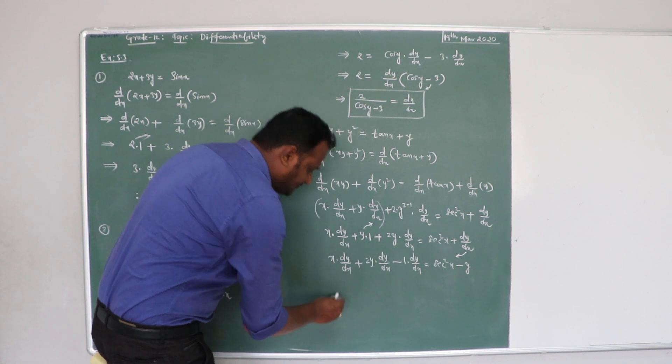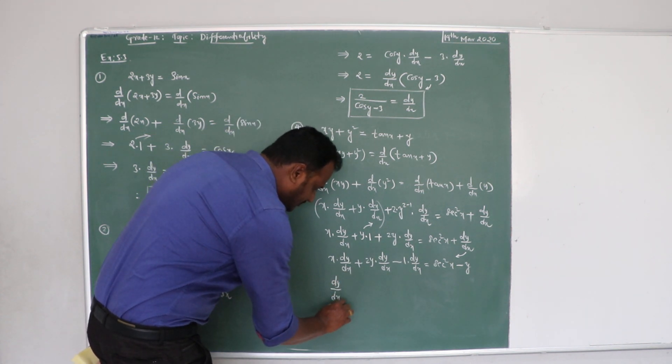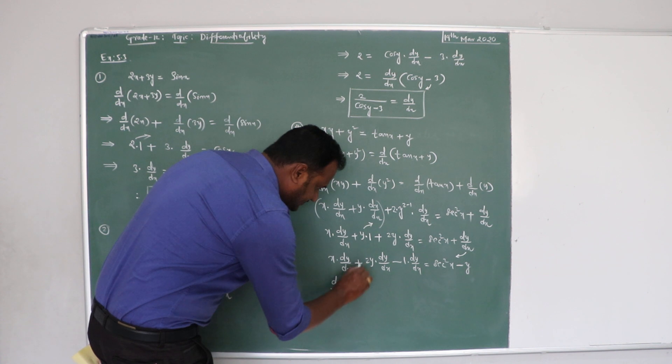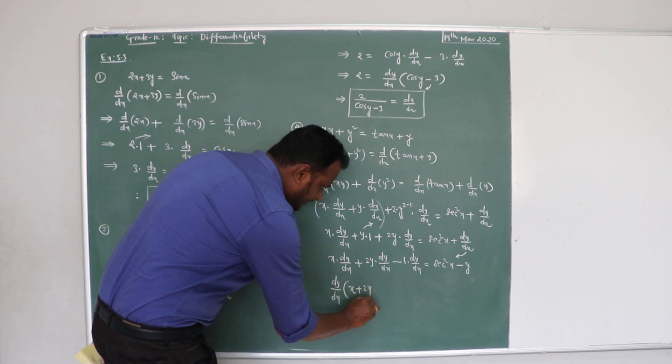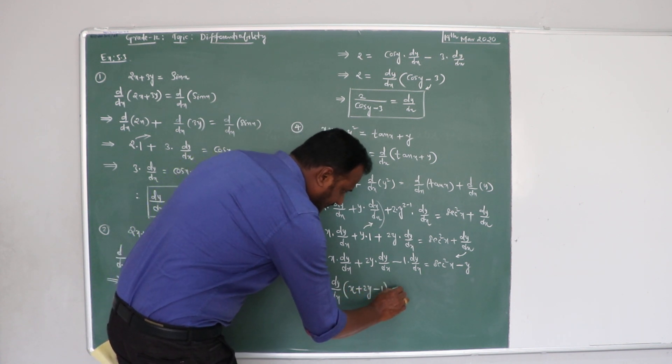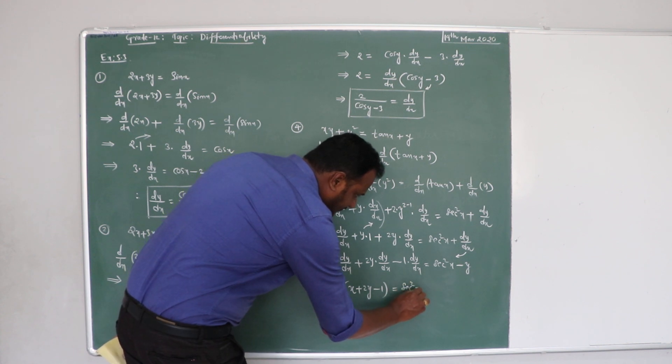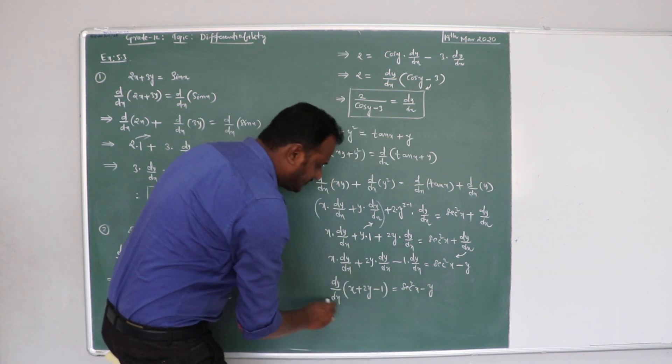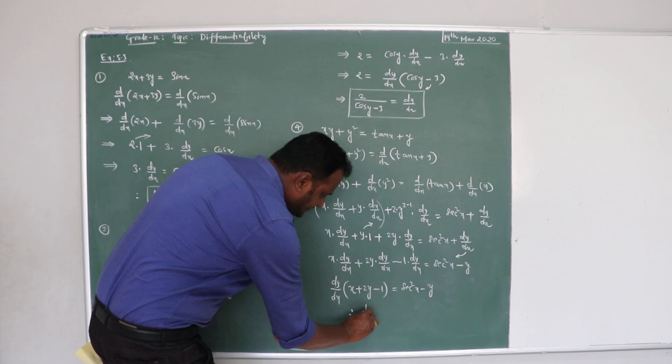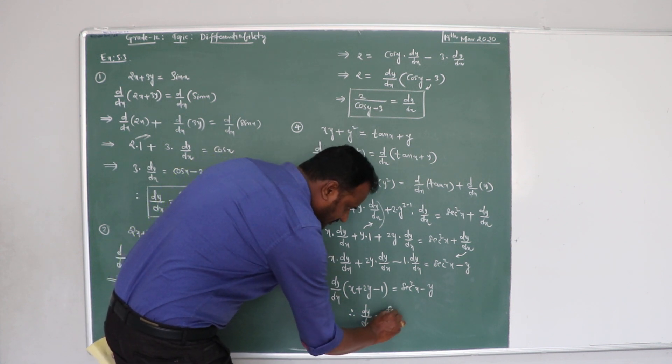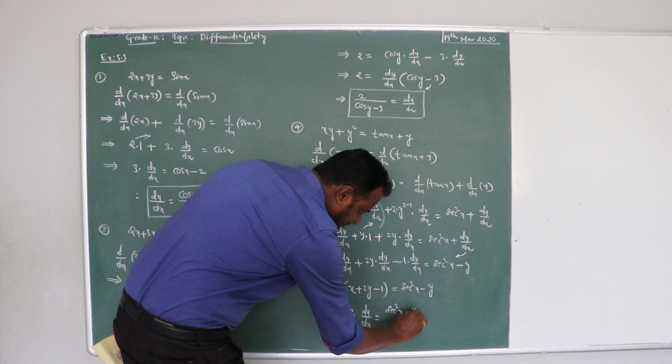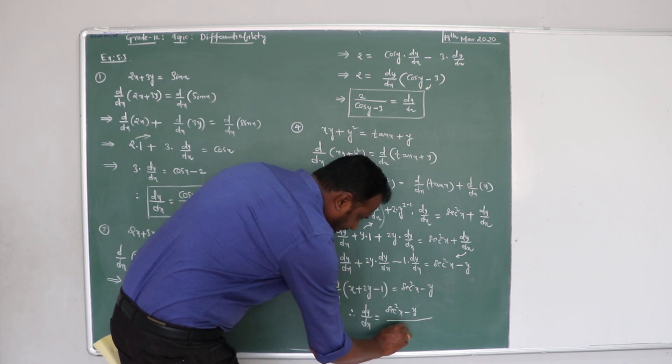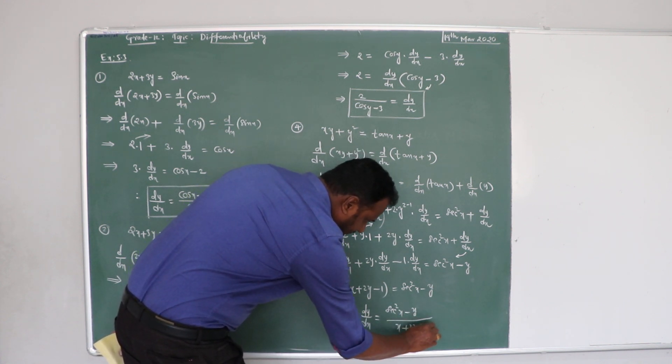From all three terms, take dy by dx common, and remaining here x plus 2y minus 1 is equal to secant square x minus y. So, therefore, dy by dx is equal to secant square x minus y divided by x plus 2y minus 1.